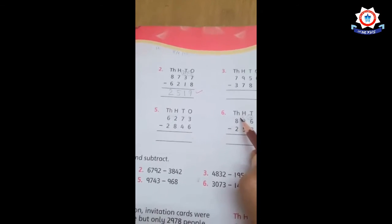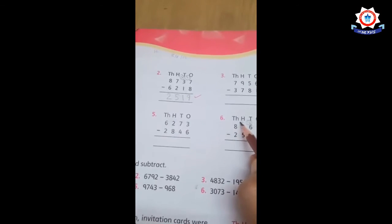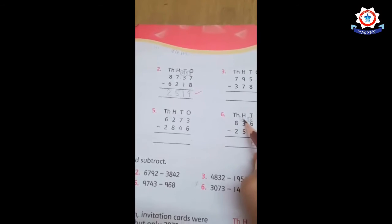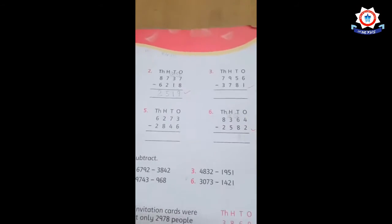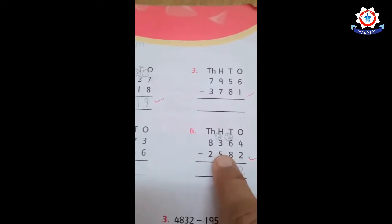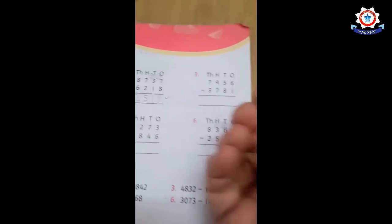So again we will borrow from the next column, from the digit 8. When 8 lends 1, this 2 becomes 12.